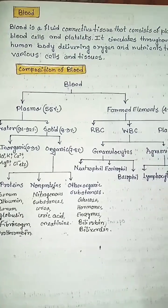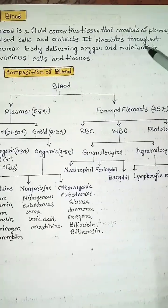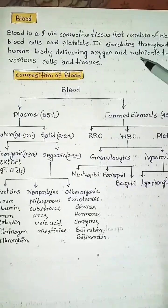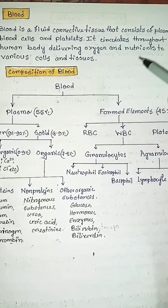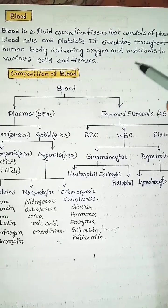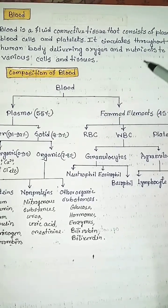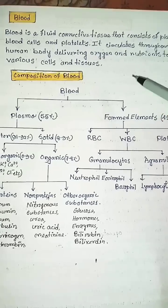What is blood? Blood is a fluid connective tissue that consists of plasma, blood cells and platelets. It circulates throughout the human body, delivering oxygen and nutrients to various cells and tissues.